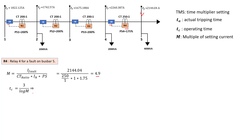The next thing is to calculate tc. As discussed in the IDMT tutorial, tc relates to the characteristics curve for your IDMT relay and is based on the relevant standard. Replacing the values, tc is equal to 4.35 seconds. That is the operating time of that IDMT relay.